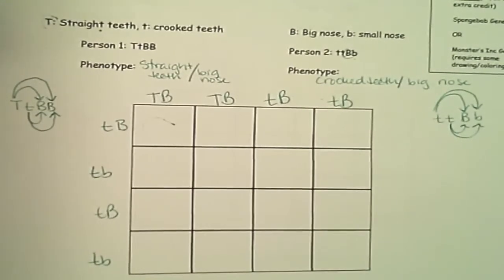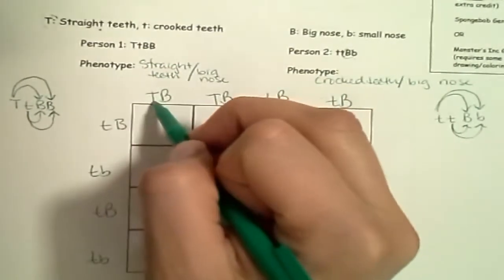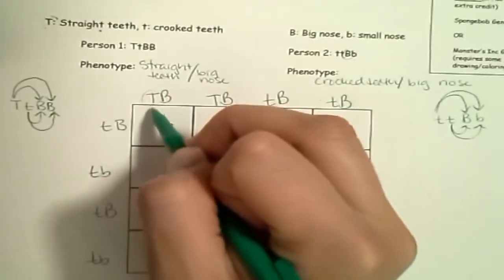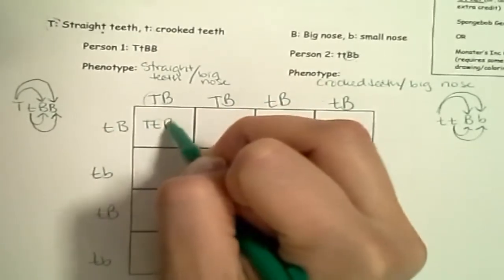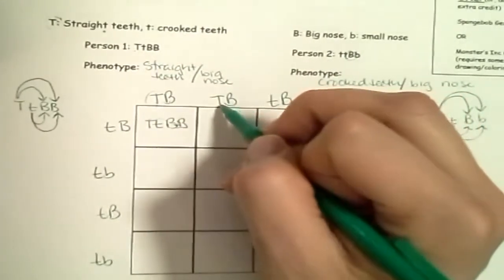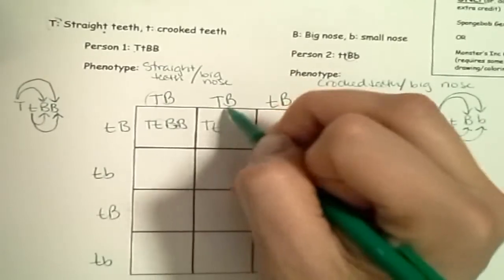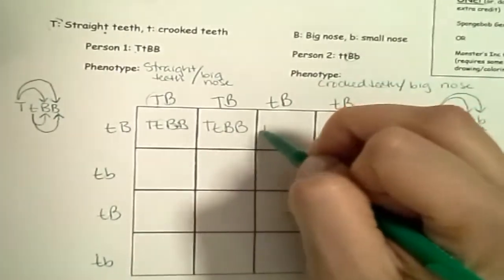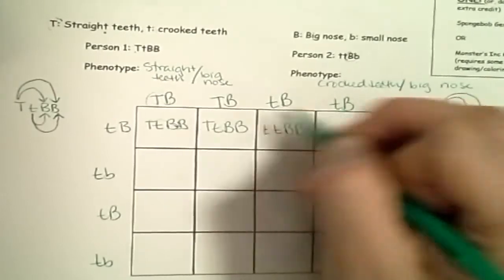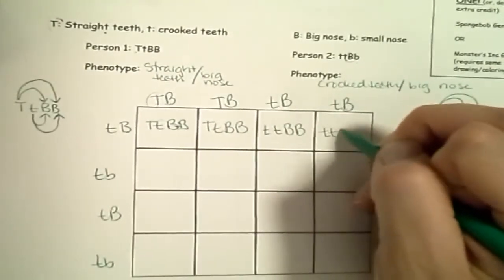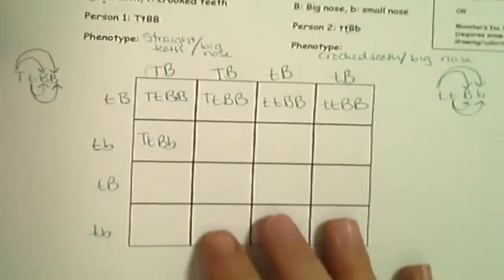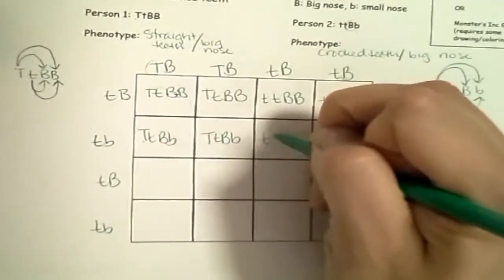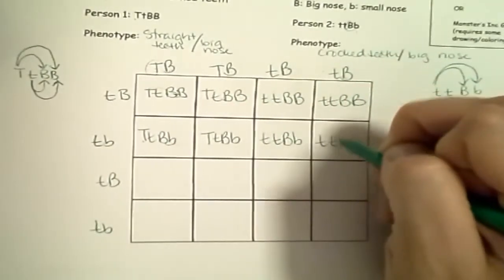Now to multiply, just like before, we're going to have four letters in each box — capital T comes first. Our first combination is big T, little t, big B, big B. Next: big T, little t, big B, big B. Then: little t, little t, big B, big B — and little t, little t, big B, big B. Moving to the next column: big T, little t, big B, little b. And continuing: little t, little t, big B, little b — repeated for each row.